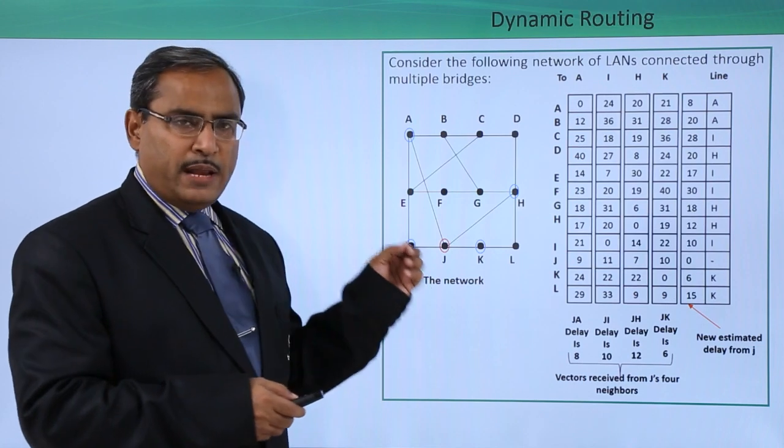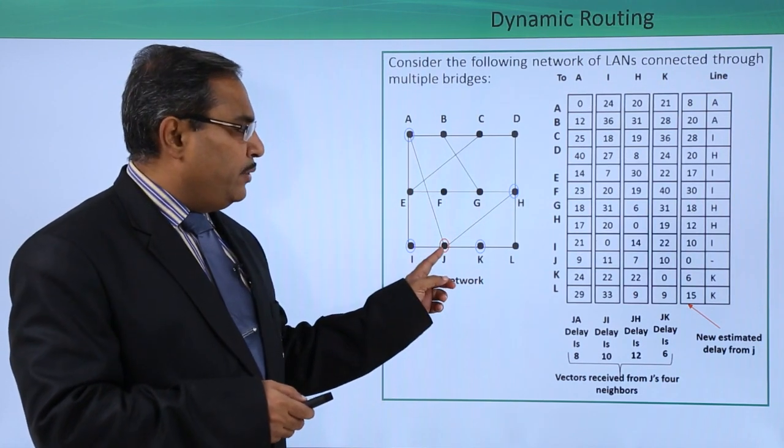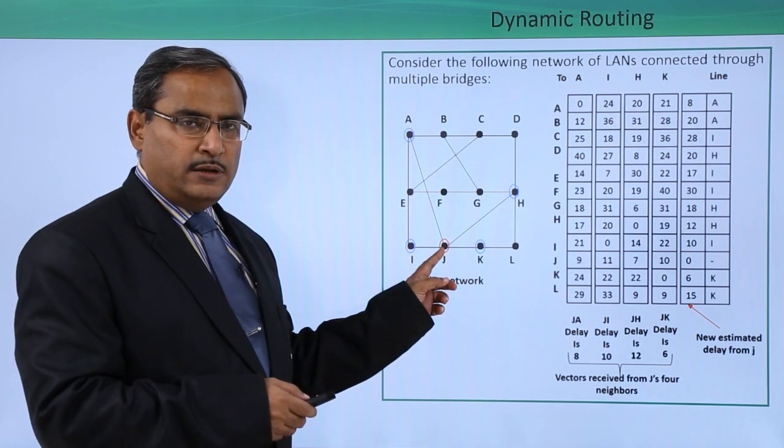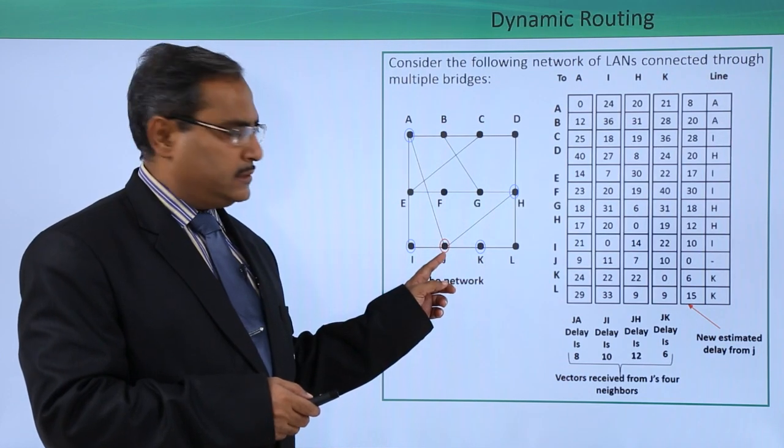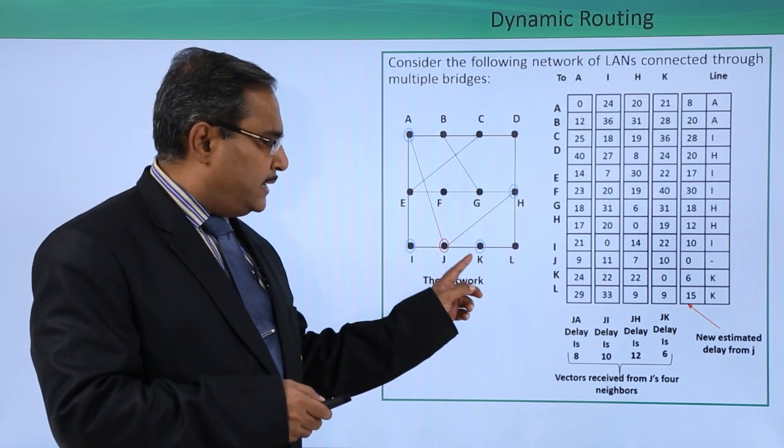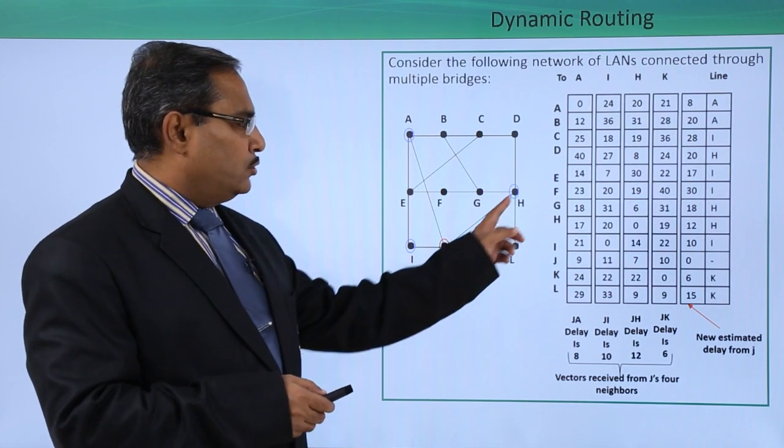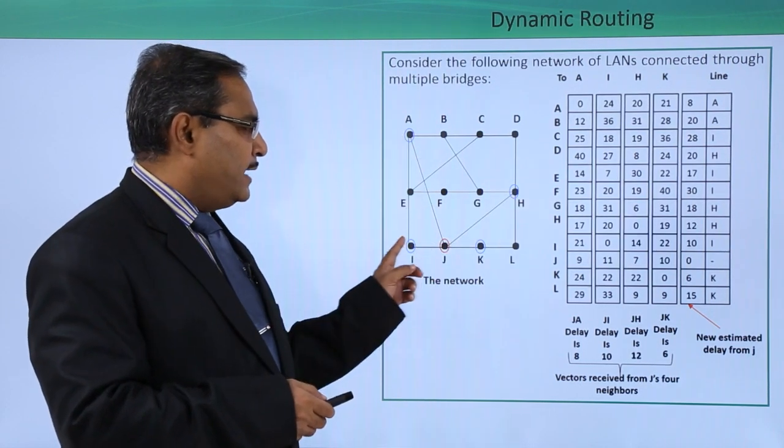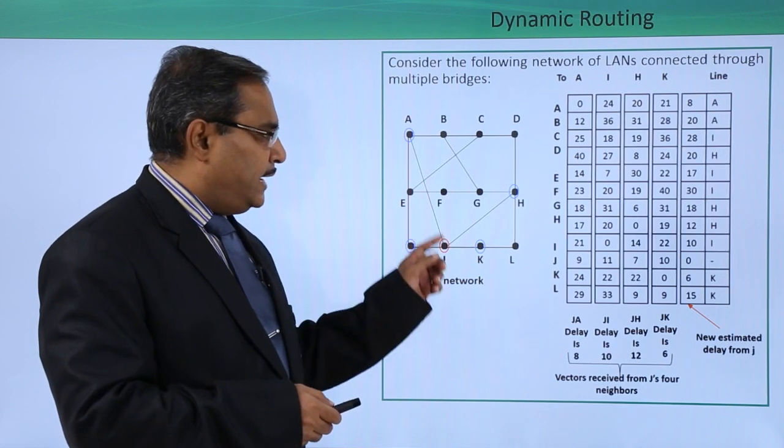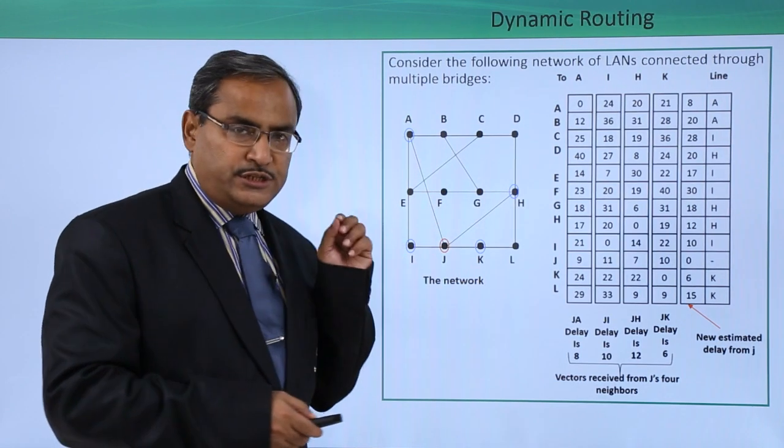Now what will happen in case of Bellman Ford Algorithm: J will ask the routing tables from the adjacent neighbors. These neighbors are K, because we have this direct edge between J and K, and also H, A, and I. So I, A, H, K are the neighbors of bridge J.